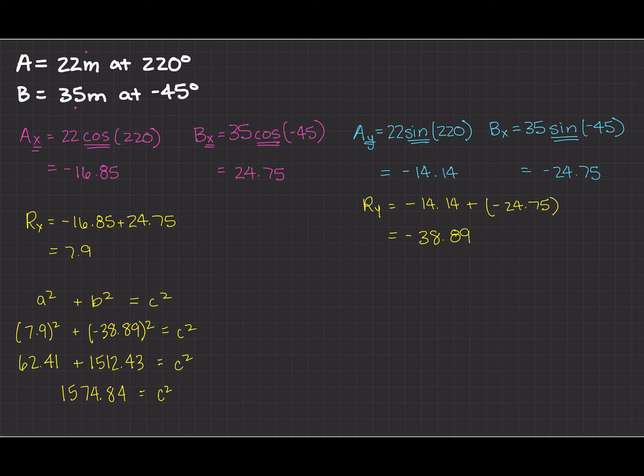And that will give us 1574.84. And that's c squared. So we still have to take the square root and that's going to give us 39.68. And that's going to be our c.